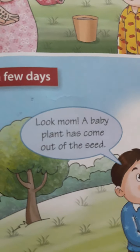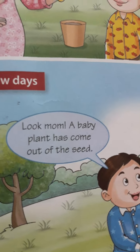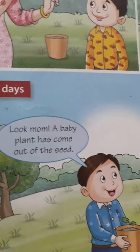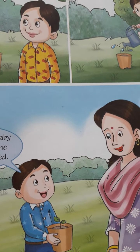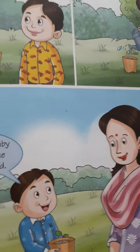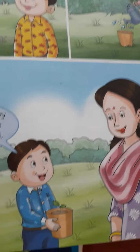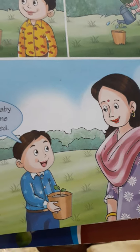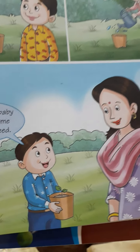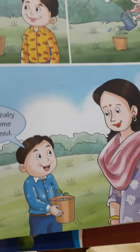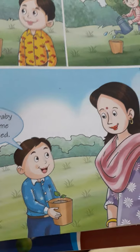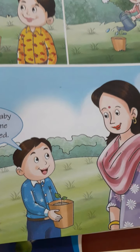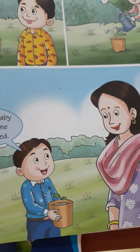One day Rahul tells his mother, 'Look mom, a baby plant has come out of the seed!' A baby plant is known as a sapling — S-A-P-L-I-N-G. A baby plant is known as a sapling.